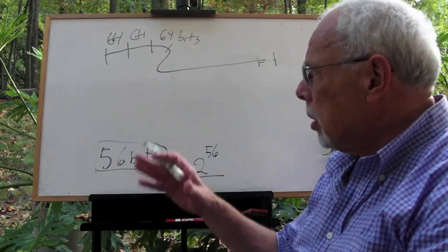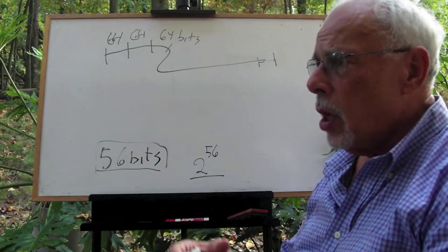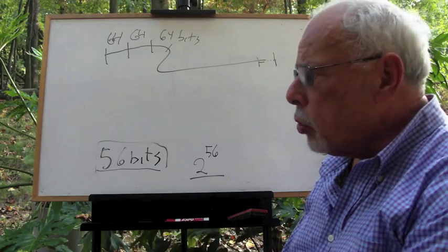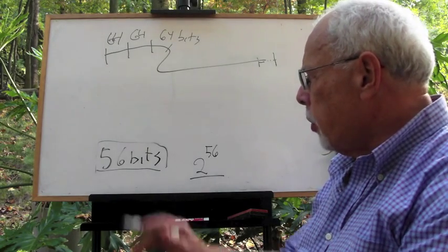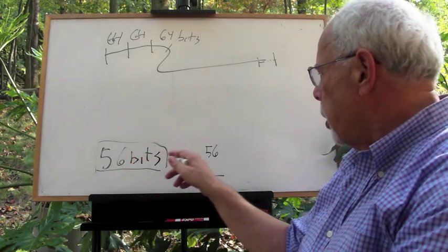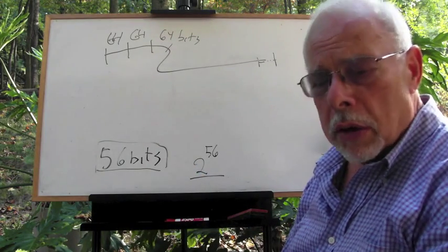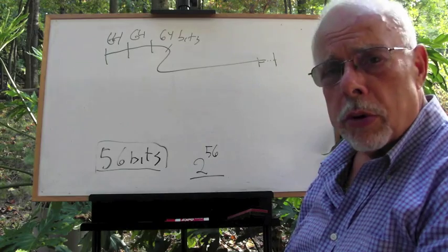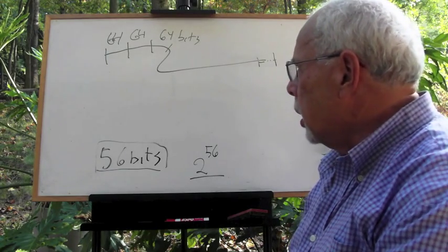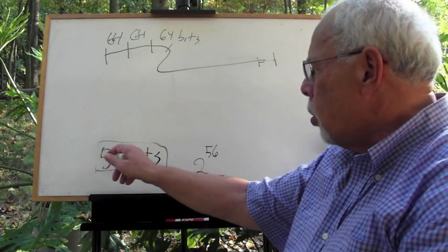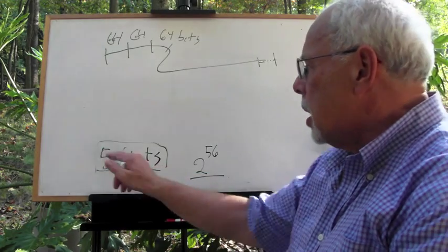But there are some remedies, something called triple DES, where you use two keys and then you have 2 to the power of 112, which is much, much bigger. Even today's computers have a hard time handling it. But anyway, let's go to the basics. 56 bits, that's the key.